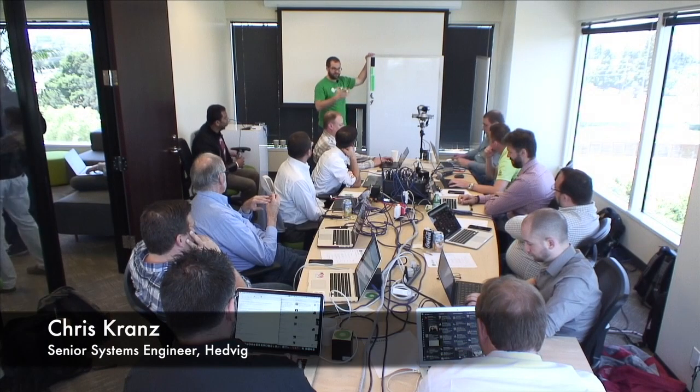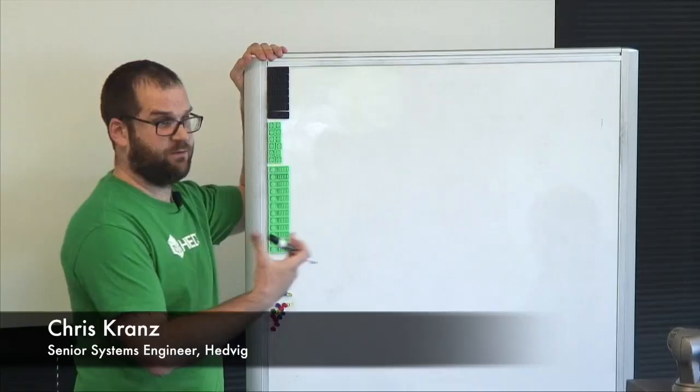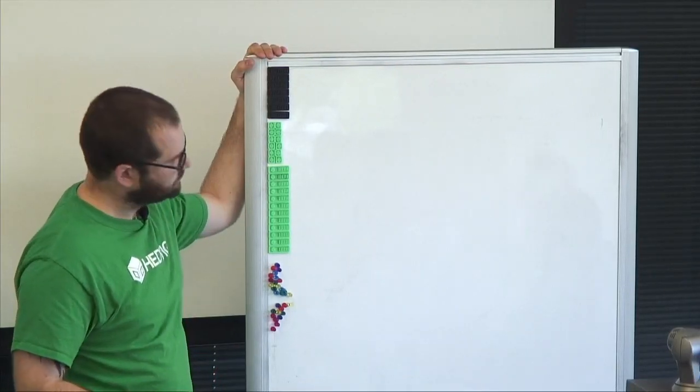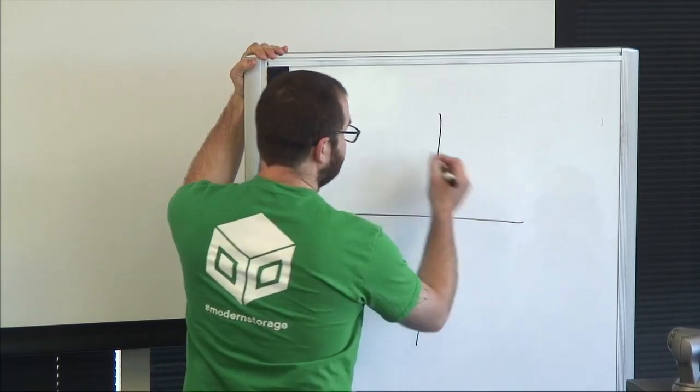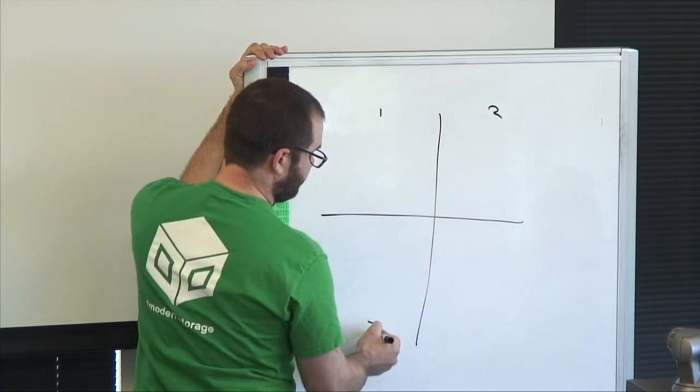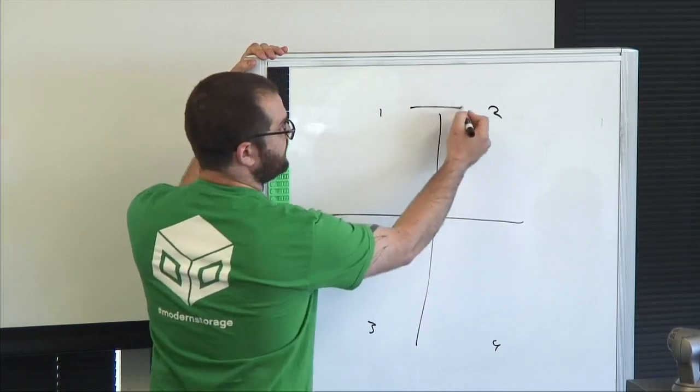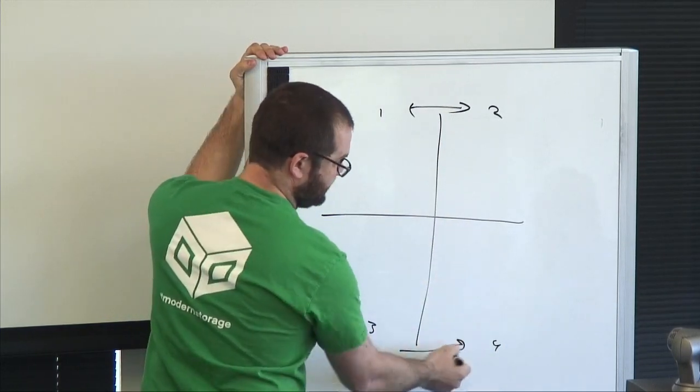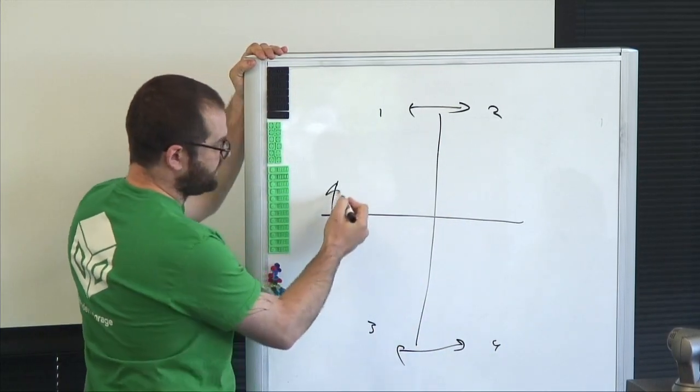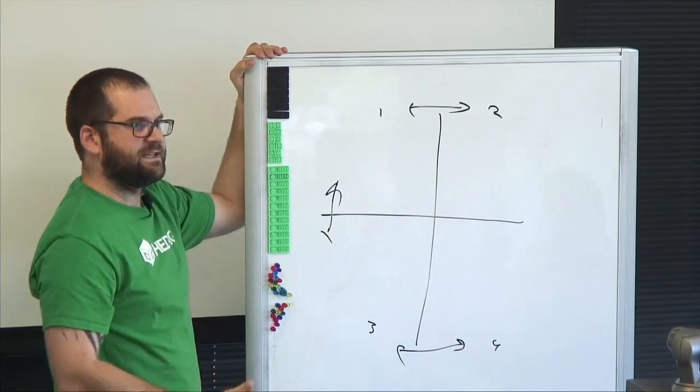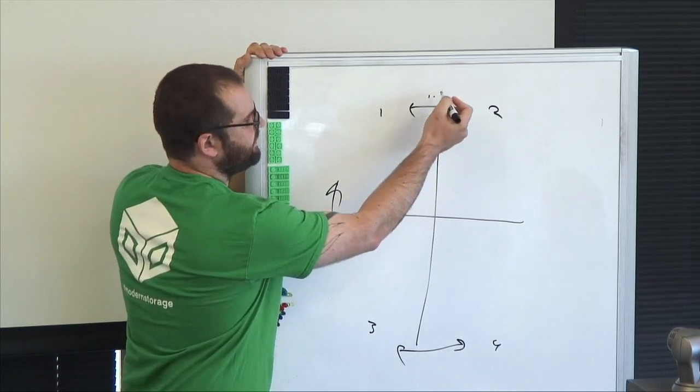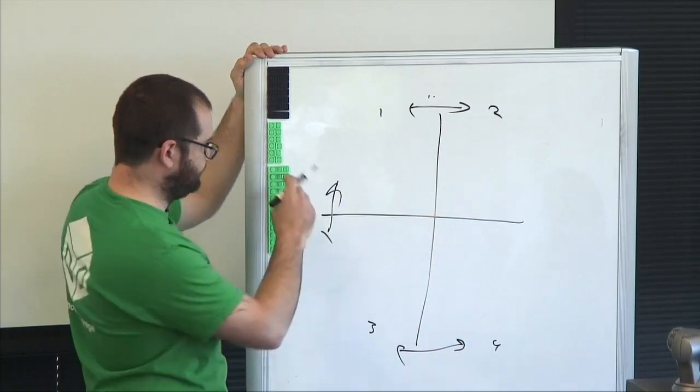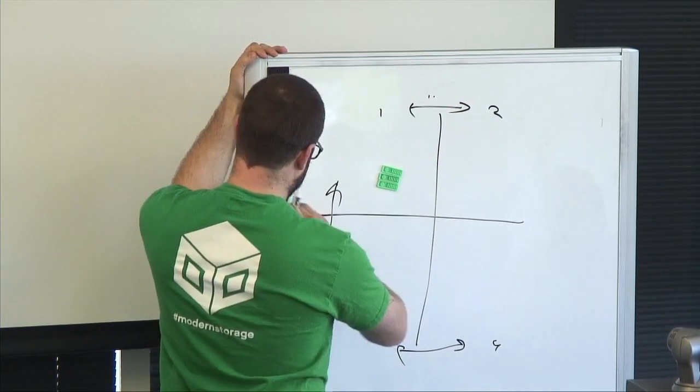Building on the dual DC concept, one customer has four data centers loosely stretched into latency pairs. Two pairs are latency close, while cross-pairs are latency far at about 10 millisecond round trip. The close pairs have one to two millisecond round trip.